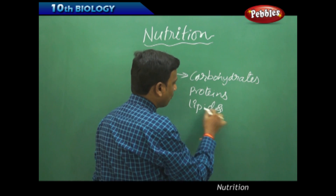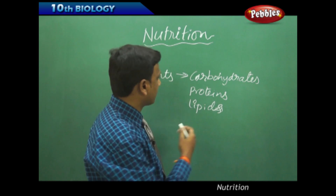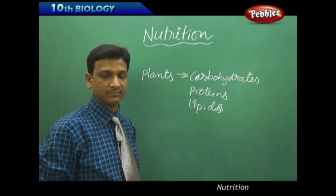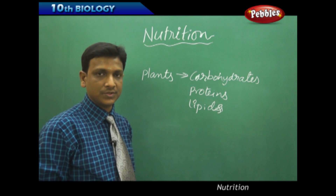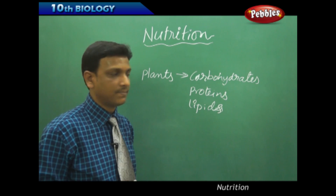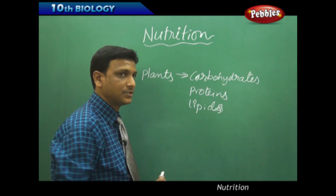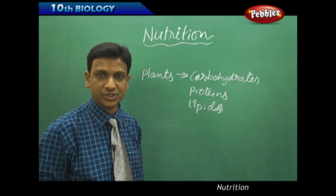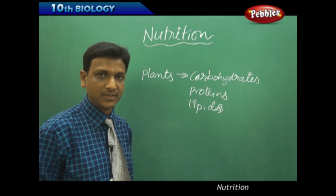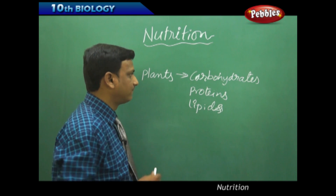These are also useful biochemicals. So other organisms are dependent on plants — heterotrophic mode of nutrition — other animals are dependent on plants for their food.